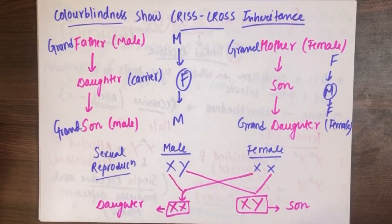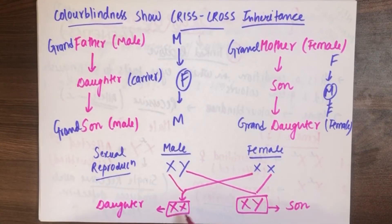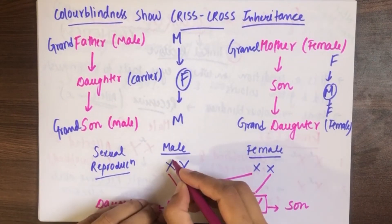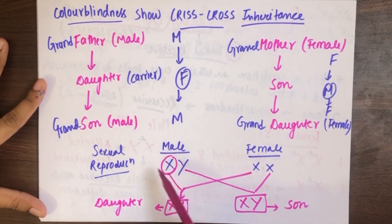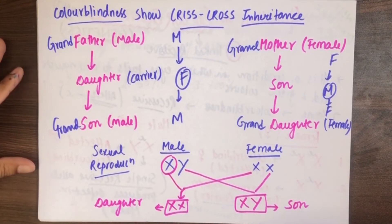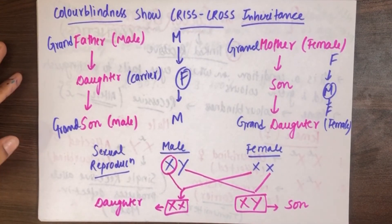मैंने ये इसलिए बताया है ताकि आपको ये याद रहे कि female के अंदर जो X आ रहा है, वो एक mother से आ रहा है और दूसरा X father से आ रहा है. तो father के पास जो एक X है, वो अपना X कभी भी male को नहीं देगा — वो हमेशा female को ही देगा. तो अगर male को color blindness हुई, तो उसकी daughter में वो X जरूर जाएगा, और daughter will become carrier. Color blind तो नहीं बनेगी वो, पर carrier जरूर बन जाएगी, क्योंकि X^c चला जाएगा.